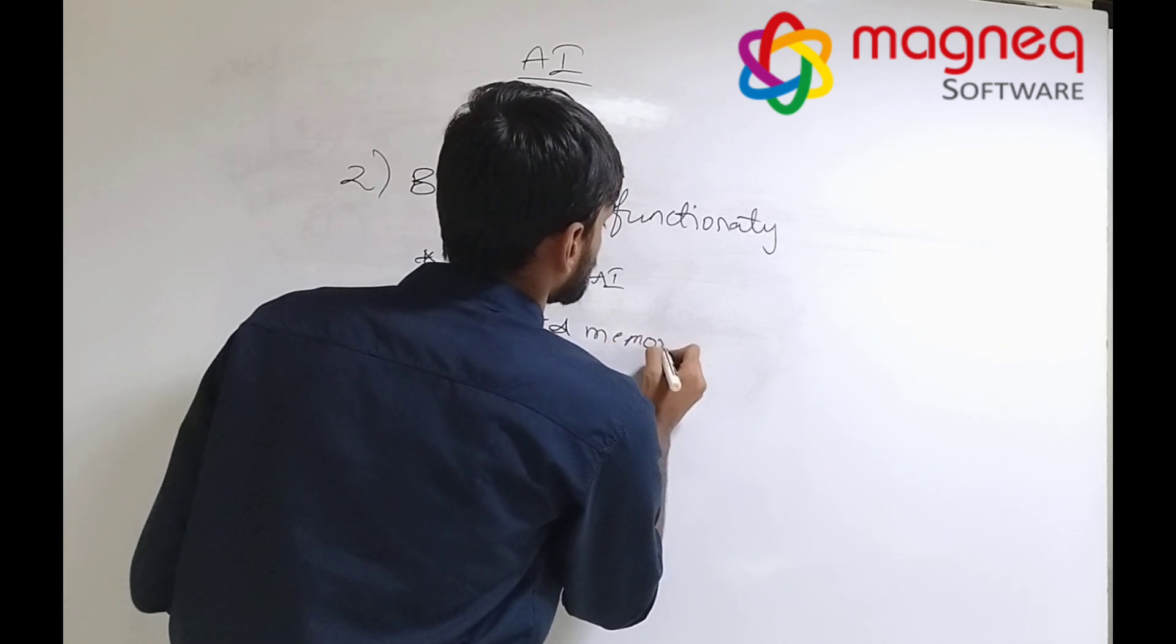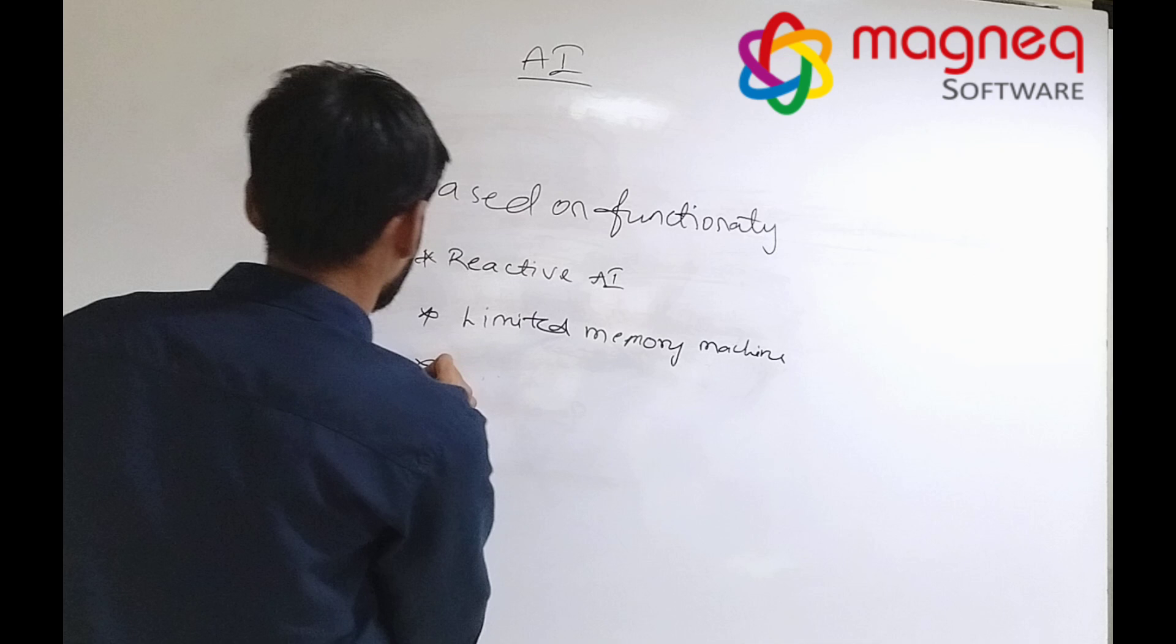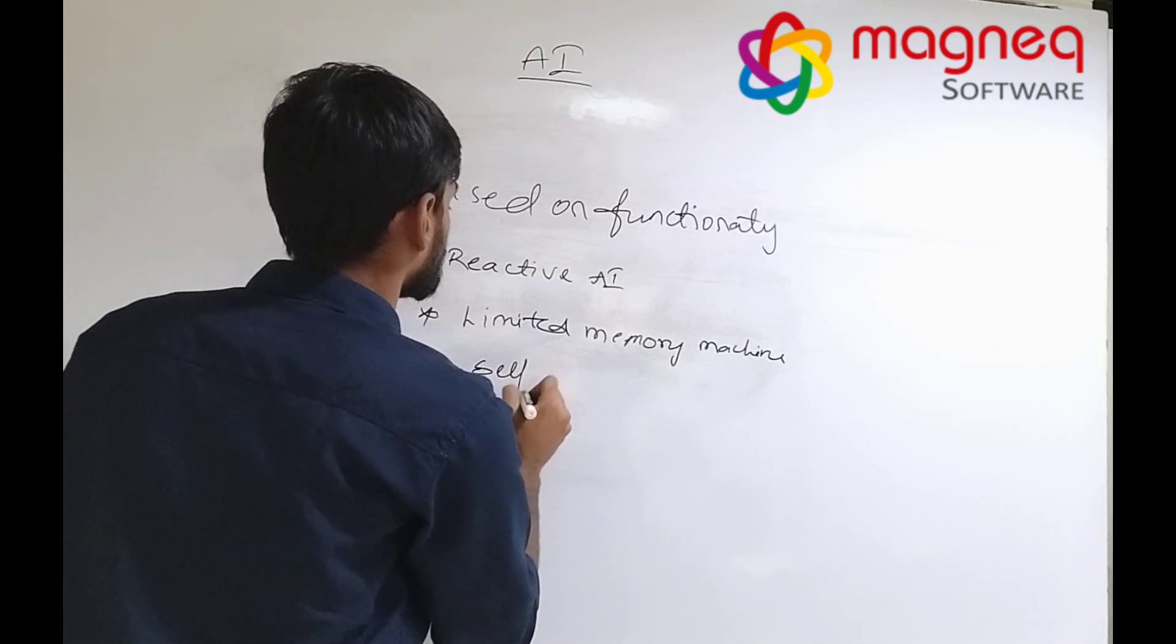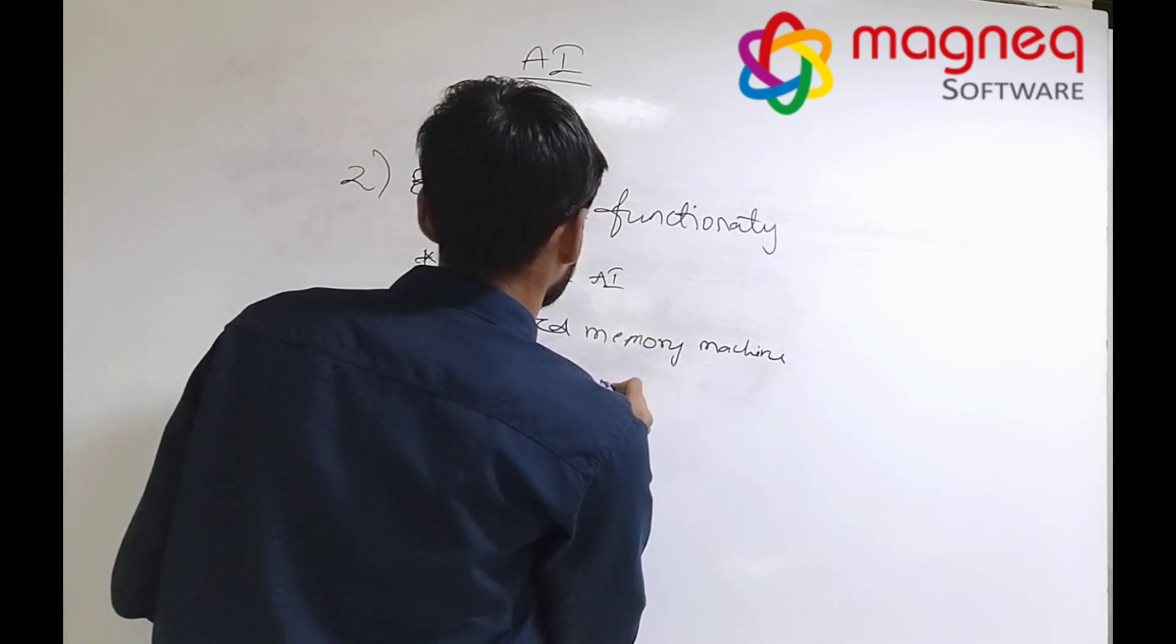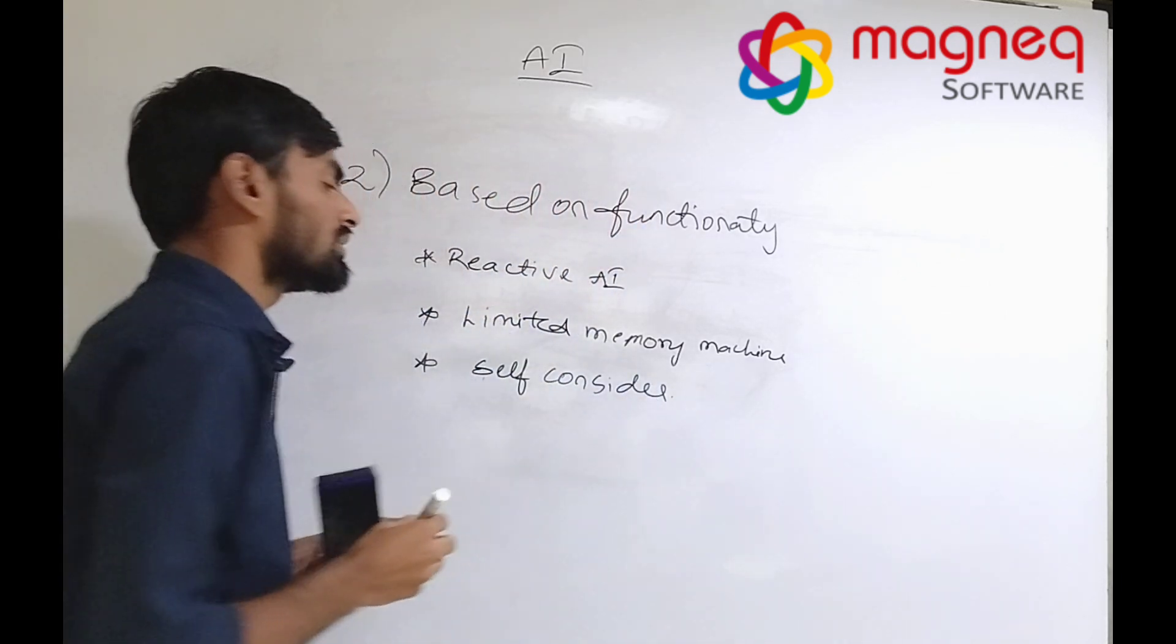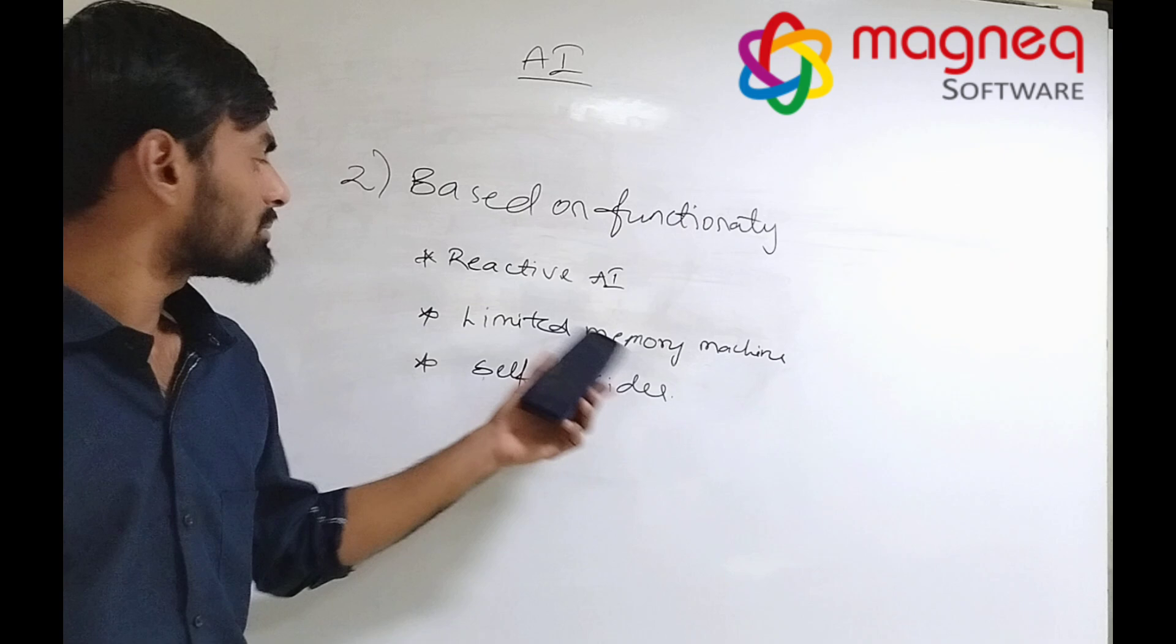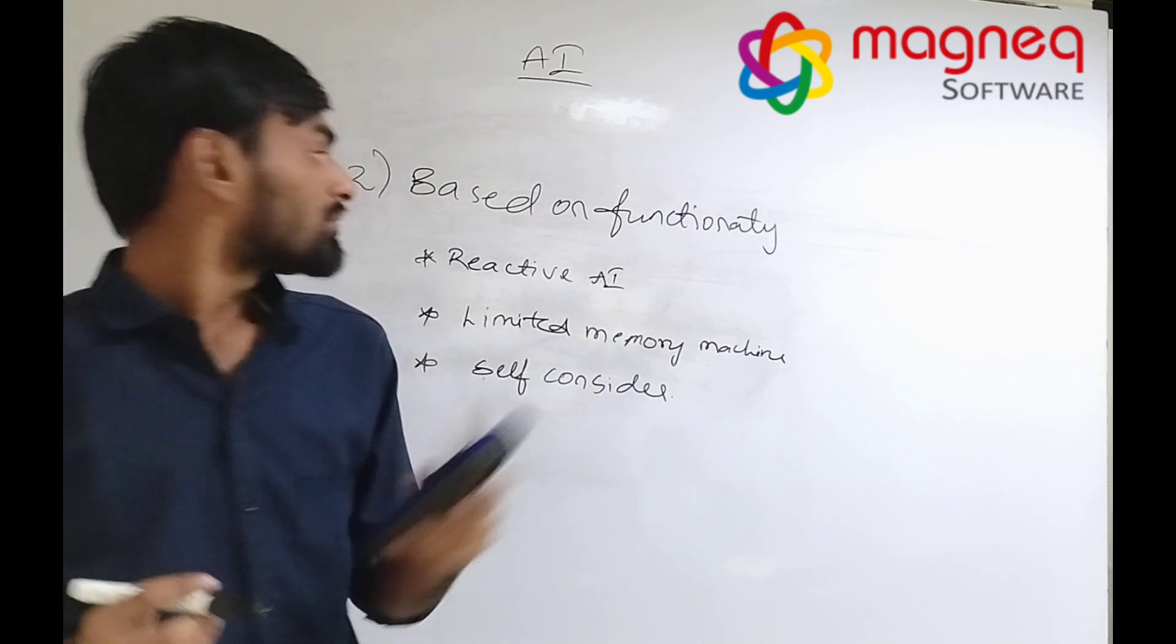So in this we are having three types: reactive AI, limited memory, and self-considered. First of all, reactive AI.